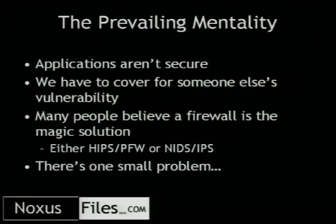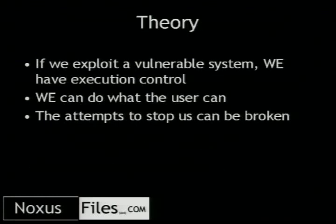A little background. There's a prevailing mentality throughout all of InfoSec and the corporate world that applications aren't secure, so we need to develop something to cover up for someone else's vulnerability. Many people believe that a firewall — an HIPS — will handle this, and personal firewalls and HIPS kind of do a similar thing but in different ways. But there's one small problem: if we manage to exploit one of these vulnerable systems, we still have execution control. We can still do whatever the user running that process can do, and attempts to stop us can be broken.